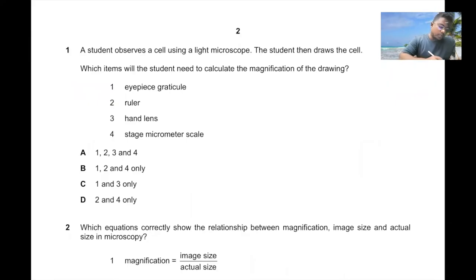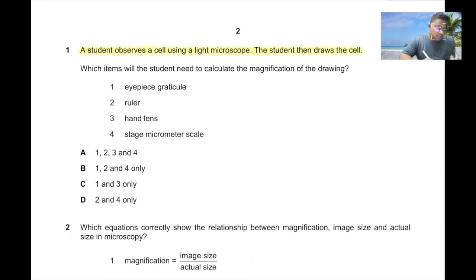Question number one. A student observes a cell using a light microscope. The student then draws the cell. Which item will the student need to calculate the magnification of the drawing?